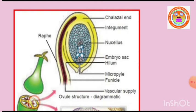An ovule may have one or two integuments. If there is one integument, it is called unitegmic. If there are two integuments, it is called bitegmic ovule. The basal region of the body of the ovule where the nucellus, the integuments, and the funicle meet is called the chalazal end.